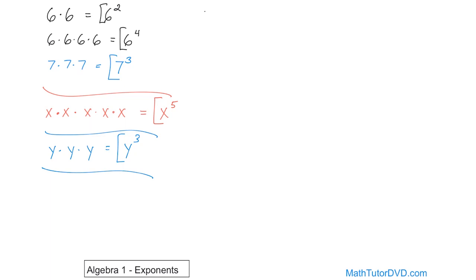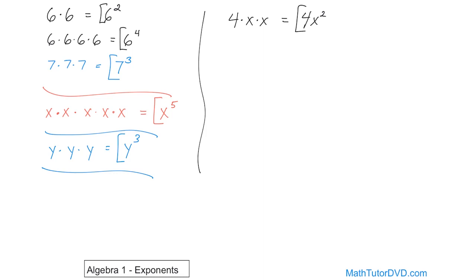What if you had something like 4 times x times x? How would you write that as an exponent? The number 4 is multiplied by everything, but it's only there one time, so the number 4 doesn't participate in the exponent. But x is multiplied by itself two times, so we can shorten that. The way you write it is 4 times x squared. You'll see things like this from here on out in algebra — 4x squared means the number 4 times x times x. That's what x squared means.